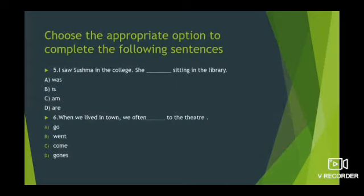Now see the next sentence: 'I saw Shushma in the college. She dash sitting in the library.' And your options are: was, is, am, are. And the correct option is A — was. She was sitting in the library.